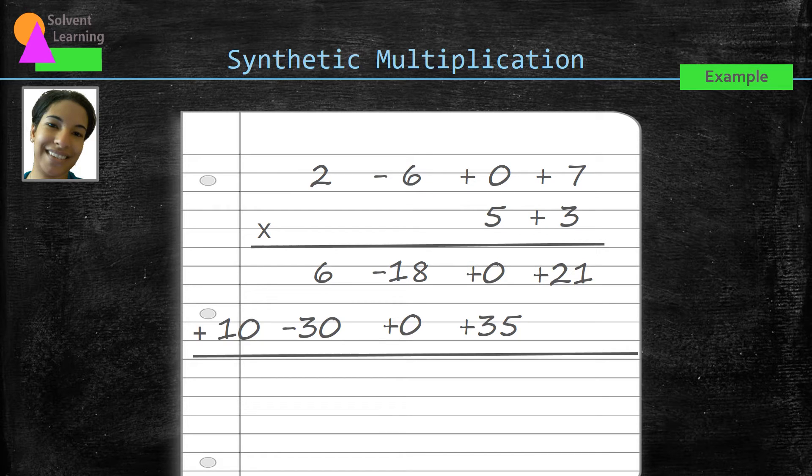Now we can add these two rows of numbers together. We'll start all the way to the right with the plus 21. Just bring that down. Now move to the left to that next column, adding the zero and 35 gives us 35. And then we keep going, adding each column until we're all complete.